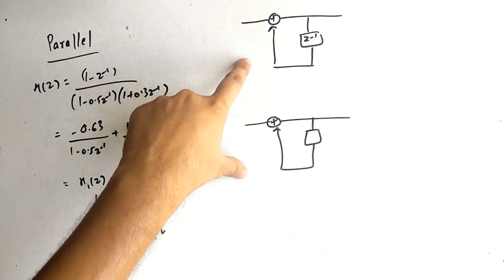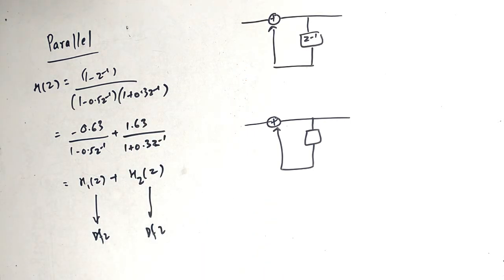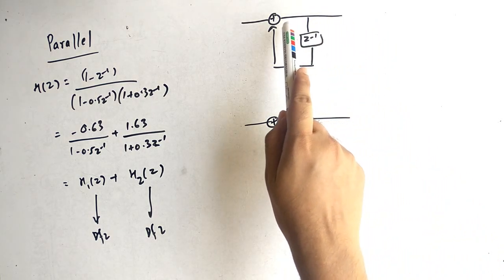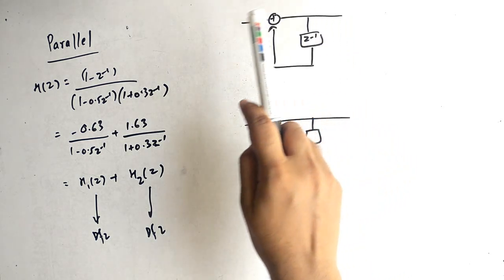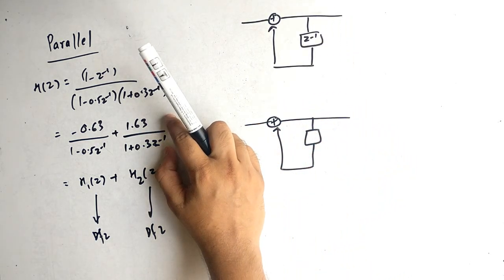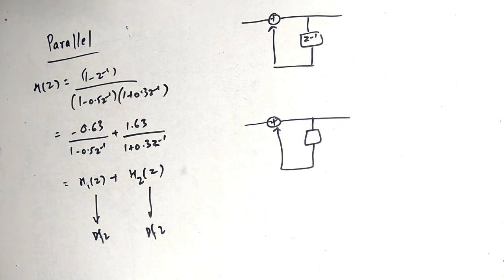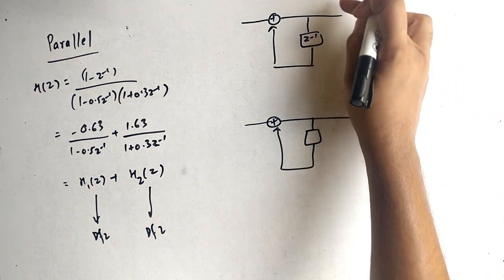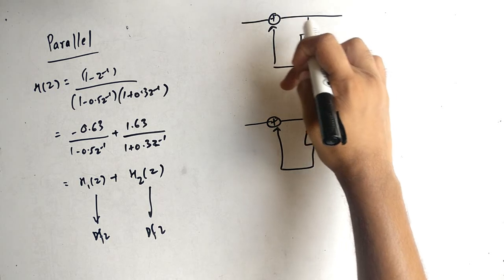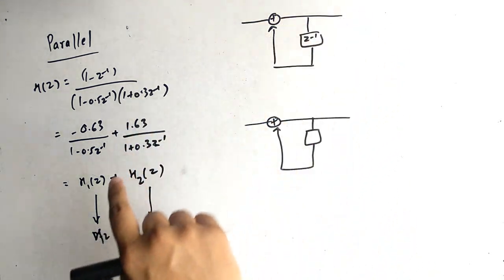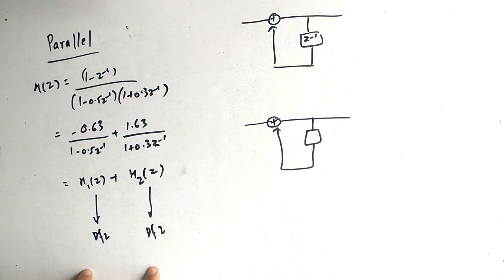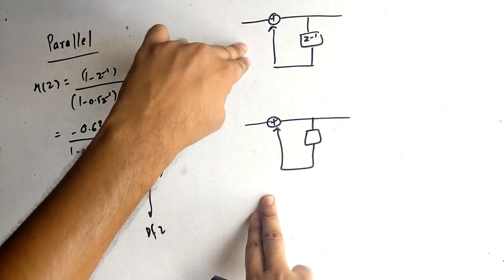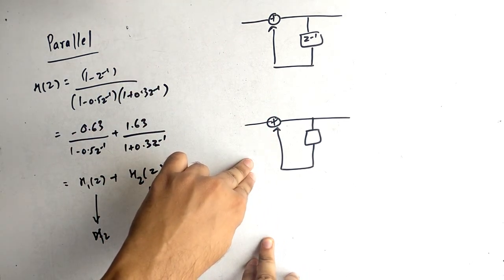For direct form 2 structure in parallel, the logic is: I usually draw two plus signs. The reason for having the plus sign was having two terms in the numerator. But now there is only one term — just a constant — so there is no need for a plus sign in the zero area. In the pole area, however, we do write the plus sign because there are two terms in the pole. We draw two structures: one for H1 of Z and one for H2 of Z.